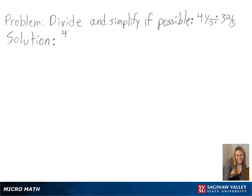Our problem is to divide and simplify if possible. The first part of our solution is to convert our mixed numbers into fractions so we are able to divide. Converting these, we get 13 over 3 divided by 17 over 5.